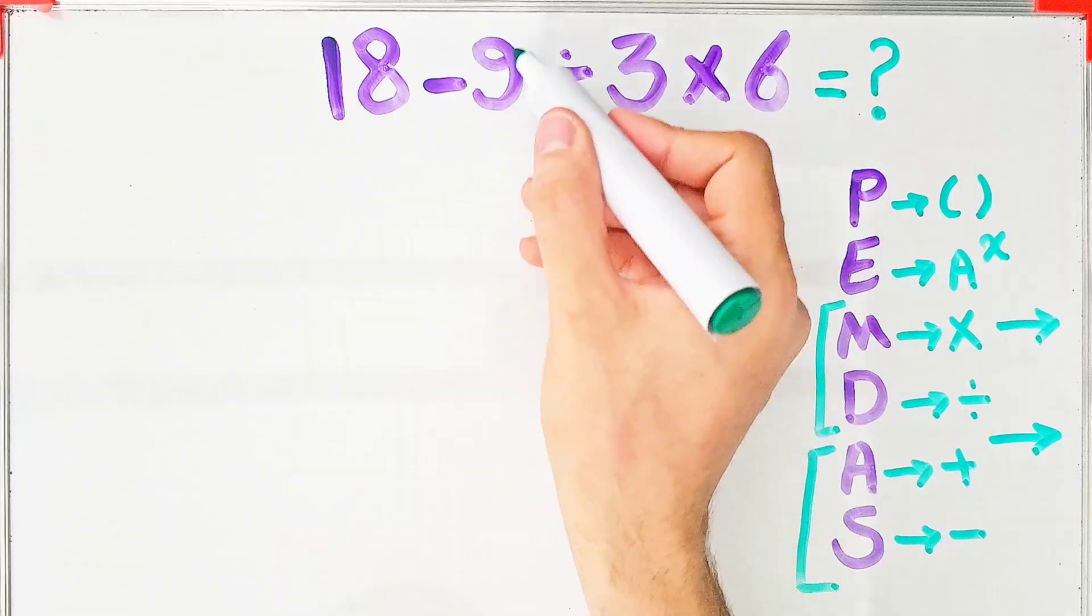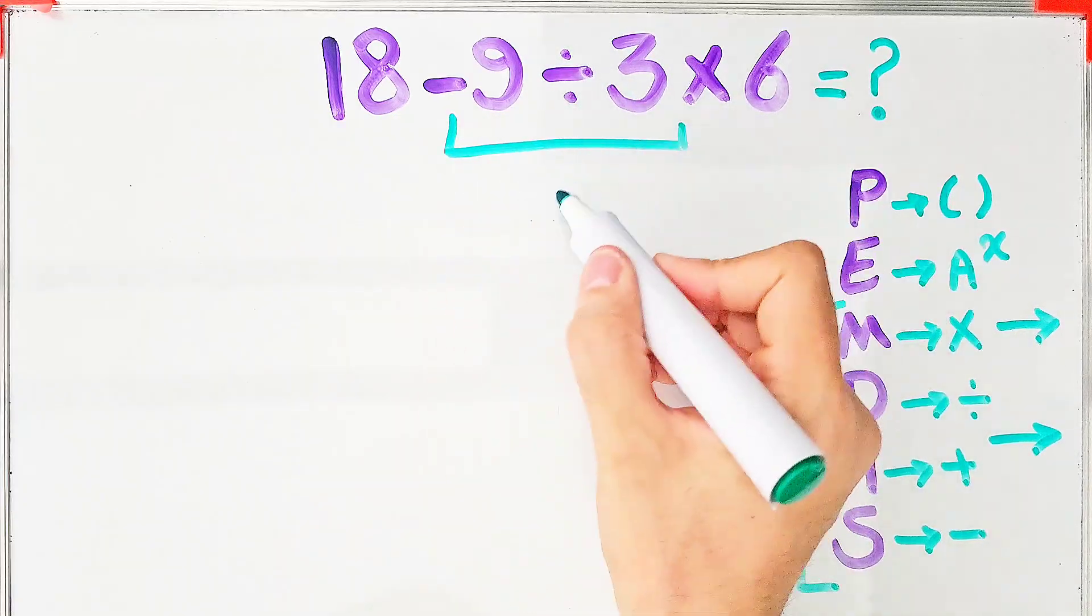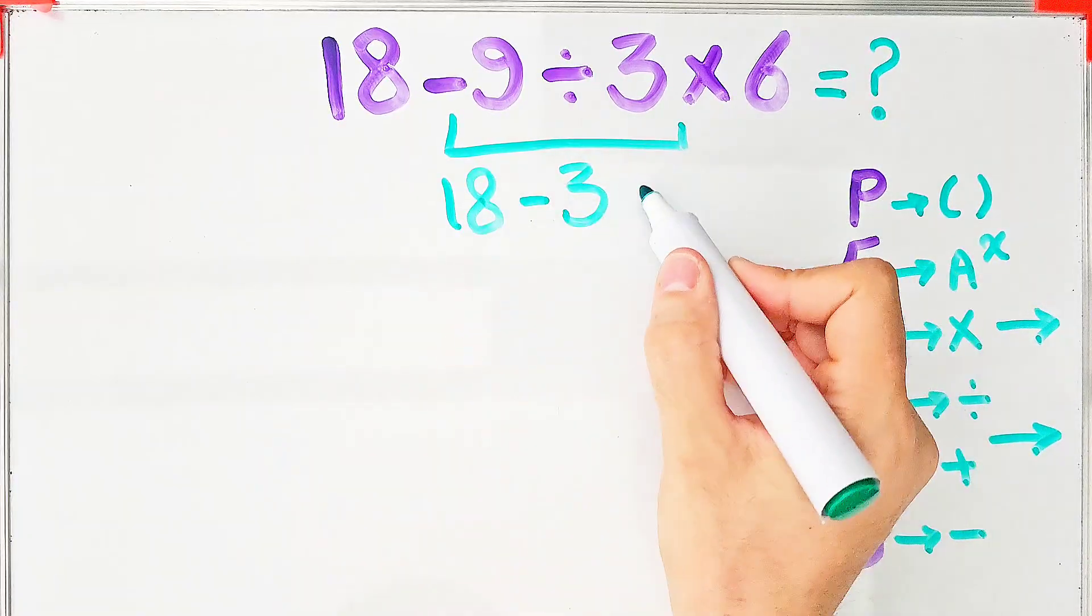First, we do this division. We have negative 9 divided by 3 that equals negative 3. And the question is 18 minus 3 then times 6.